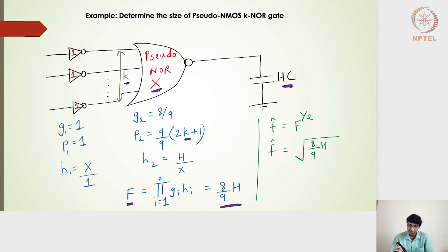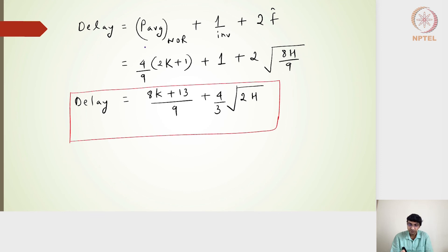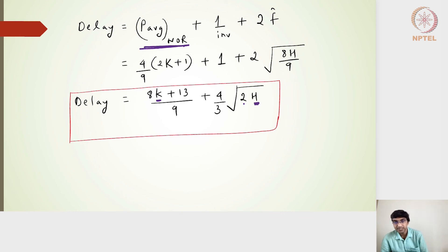With the individual stage effort equal to √(8h/9), we can find the size x and the delay. The delay expression is the sum of the p_average parasitic for the pseudo-NMOS NOR gate plus the inverter parasitic of 1, plus two times the individual stage effort. The NOR gate normalized parasitic is (4/9)·(2k+1), and the individual stage effort is √(8h/9). If we know k and h, we can find the normalized delay; multiplying by 3RC gives the absolute delay in picoseconds.